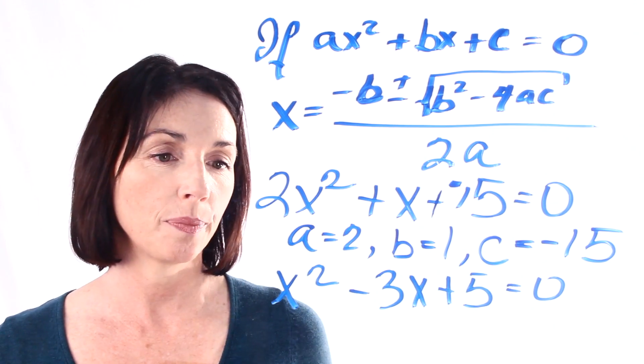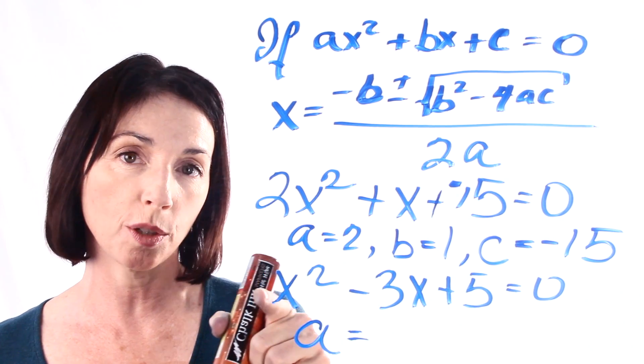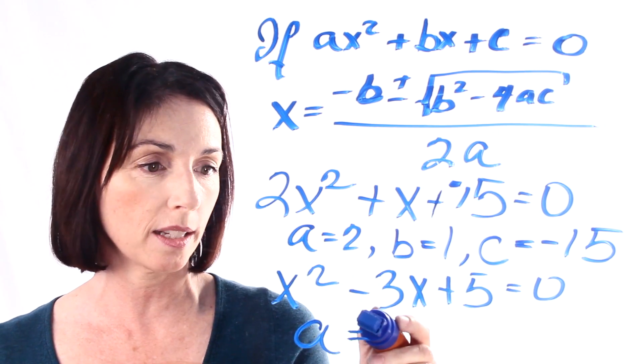Now, what about this one down here? a, the coefficient of the x squared term, is just 1, because 1 times x squared is equal to x squared.